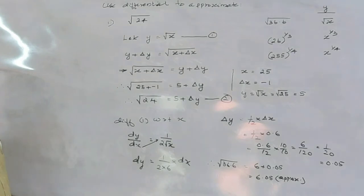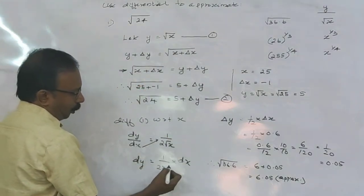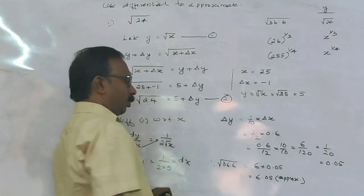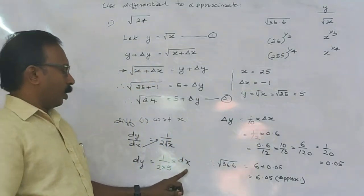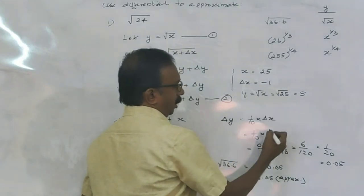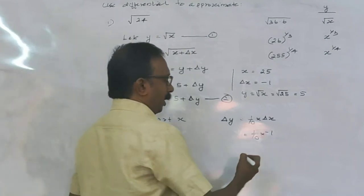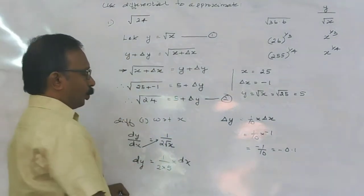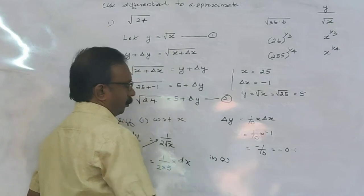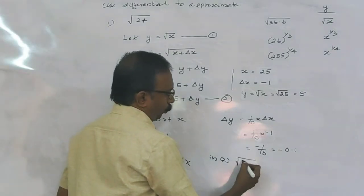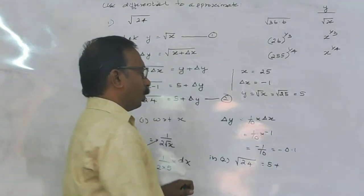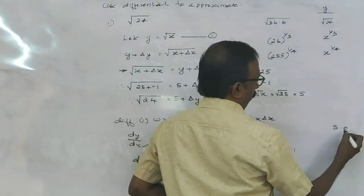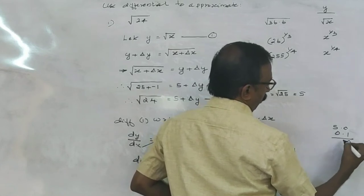Differentiating equation 1 with respect to x: dy equals 1/(2 root x) times dx. Substituting x equals 25, dy equals 1/(2×5) times dx, which is 1/10 times delta x. Since delta x equals minus 1, delta y equals minus 1/10, that is minus 0.1. Therefore root of 24 equals 5 plus (−0.1), which is approximately 4.9.